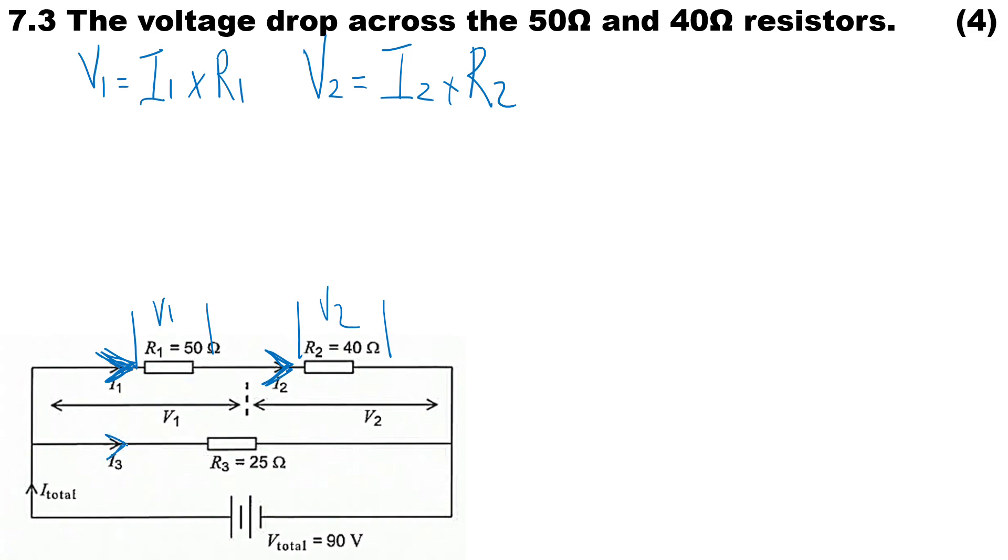We do know what the total current is - 4.6 amps. So let's first calculate I3. I3 is equal to the total voltage (because it's a parallel branch) divided by the resistance of 25 ohms. The voltage across that entire branch is 90 volts. 90 divided by 25, therefore I3 is 3.6 amps.